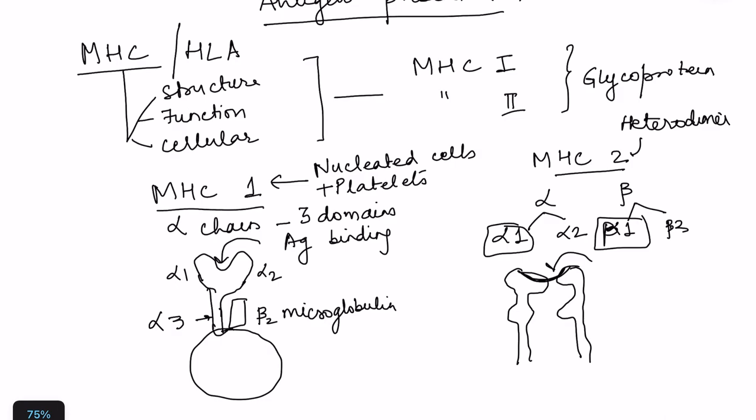MHC1 has only an alpha chain, though some books also call MHC1 a heterodimer because it is associated with beta2 microglobulin. There is a little controversy here, but for MCQs, choose the best possible answer based on the options given. MHC1 is present on nucleated cells and platelets, while MHC2 is present only on antigen presenting cells.